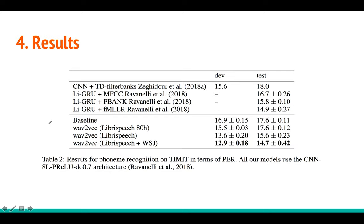They also compare phoneme error rate (PER) for the TIMIT dataset, comparing with Mirco Ravanelli's prior work (LIGRU), which was state of the art at that time with around 14-point-something PER on TIMIT. These authors show that if you do pre-training with LibriSpeech and WSJ, you actually beat the state of the art — a small but meaningful improvement — demonstrating that this pre-training helps.